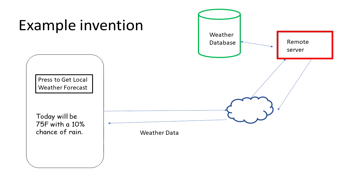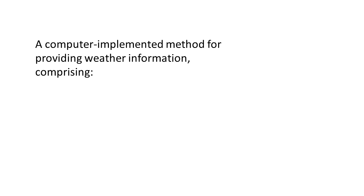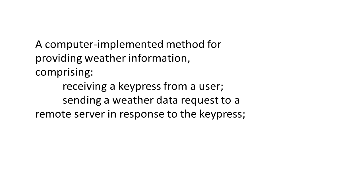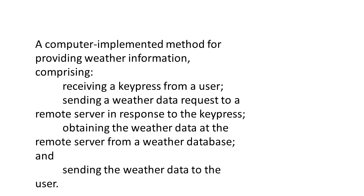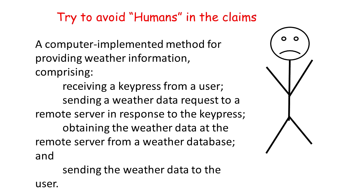With a system like this, I've encountered claims like the following: a computer-implemented method for providing weather information comprising: receiving a key press from a user; sending a weather data request to a remote server in response to the key press; obtaining the weather data at the remote server from a weather database; and sending the weather data to the user. So we have a human in the claim — where is the human?